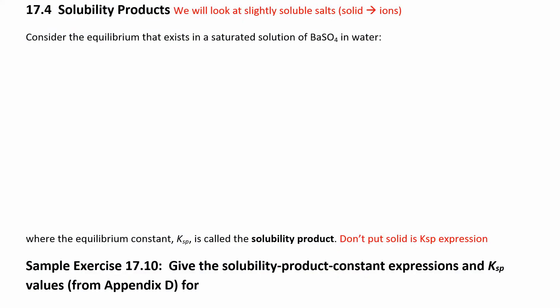Now we can look at another aspect of aqueous equilibria: solubility products. We're looking at slightly soluble salts — that's when you take a solid, put it in water, and it dissociates a little bit into ions. The equilibrium constants we're going to look at are relatively small.